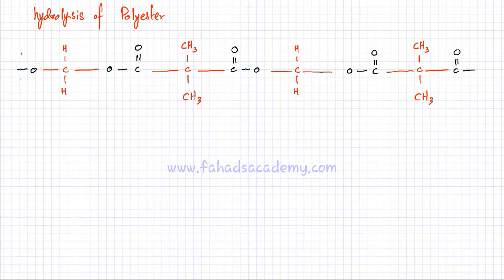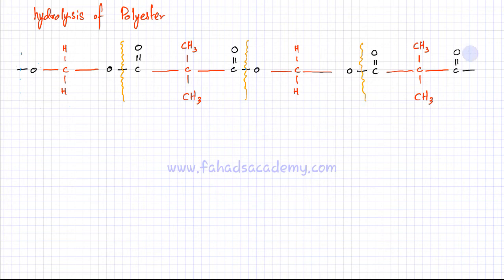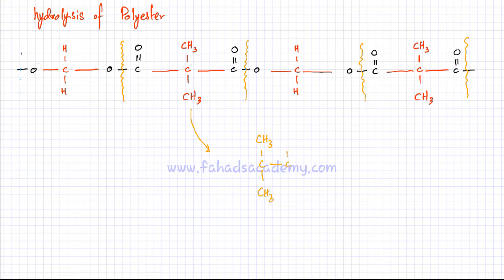Let's look at a second example. Again, I have a polyester chain with ester links highlighted in black marker — these are joining and connecting all the monomers. If this polyester is heated with dilute acid or dilute alkali, all the ester links break down. You break each ester link into two parts. One monomer that results has a carbon with two methyl groups attached to it, and C double bond O on both sides.